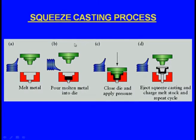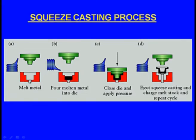Next, let us see the squeeze casting process. In squeeze casting, we get better mechanical properties. There is a mould, and the molten metal is poured in. A ram comes down, pushing the molten metal downward; the molten metal is trapped inside. Sometimes the casting will have complex geometry with very thin fins, and in ordinary casting the metal may not flow into these complex details.